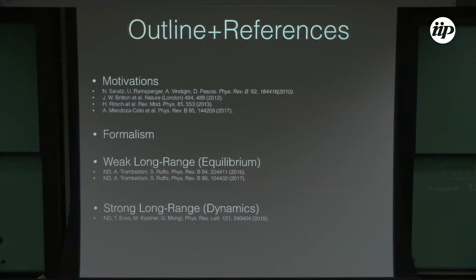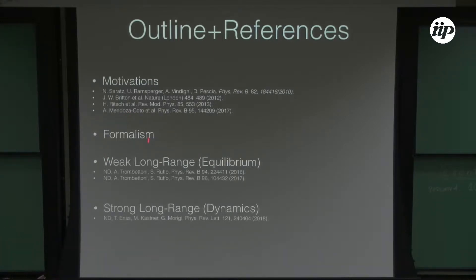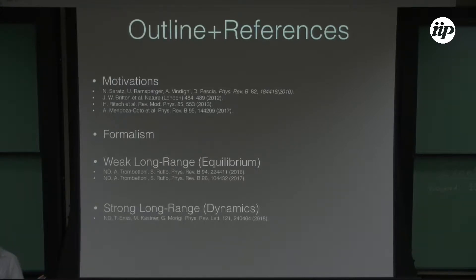Now let's go to physics. I already told you a bit about the motivations. I'm going to talk very briefly about the formulas I'll use, then deal with equilibrium physics — mainly the weak long-range regime, where alpha is larger than the dimension of the system and universal properties are non-trivial. Then I'll talk about dynamics, which is more interesting in the case of strong long-range interactions, where alpha is smaller than the dimension. I'll really focus only on alpha equal to zero.